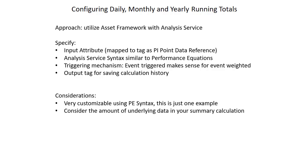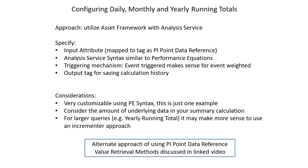You need to consider the amount of underlying data in your summary calculations. Sometimes we're going to be calling for data over a time range from the PI Data Archive, and the longer that time range is and the more events there are, the more difficult it will be for the PI Data Archive to return those values. For larger queries such as the yearly running total, it may make more sense to use an incrementer approach, which will be our second solution. There is also a completely alternate approach using PI point data reference value retrieval methods, discussed in a linked video.